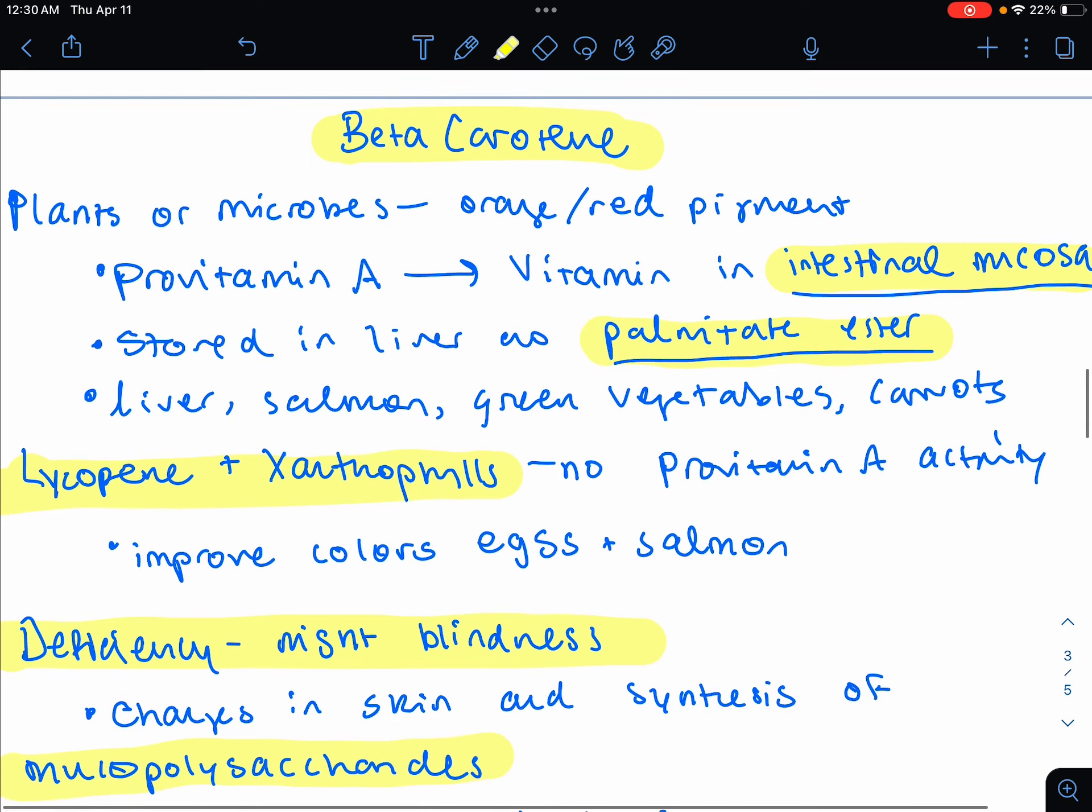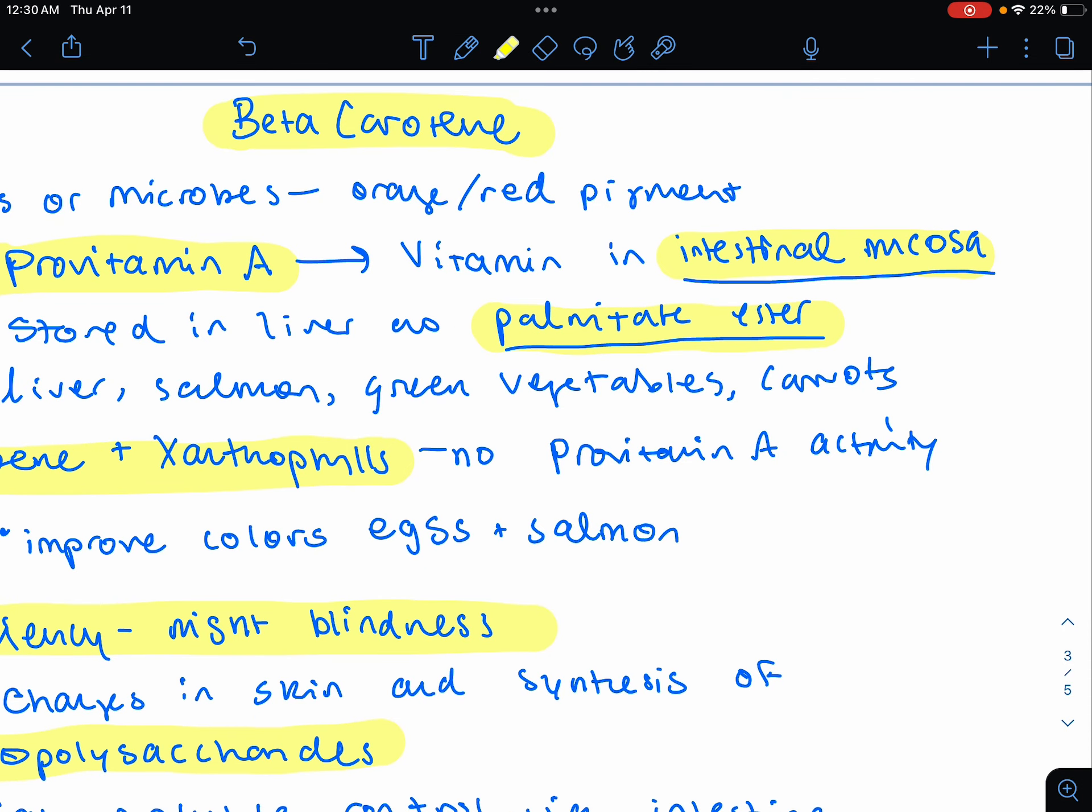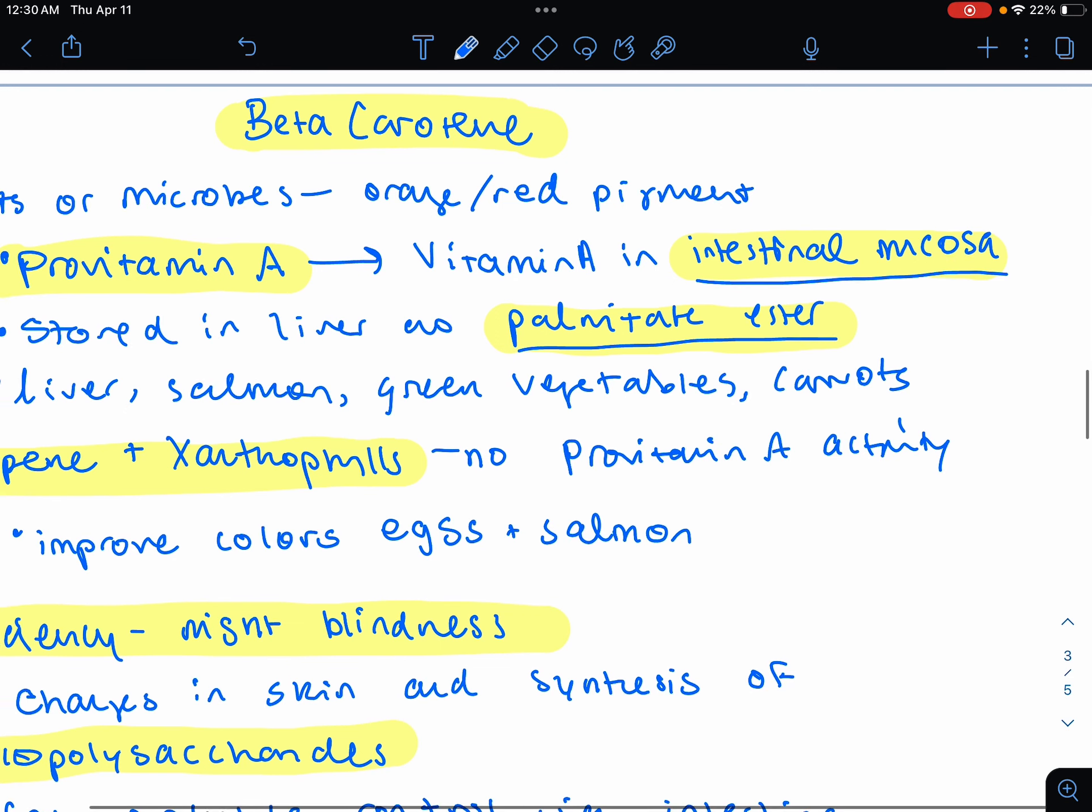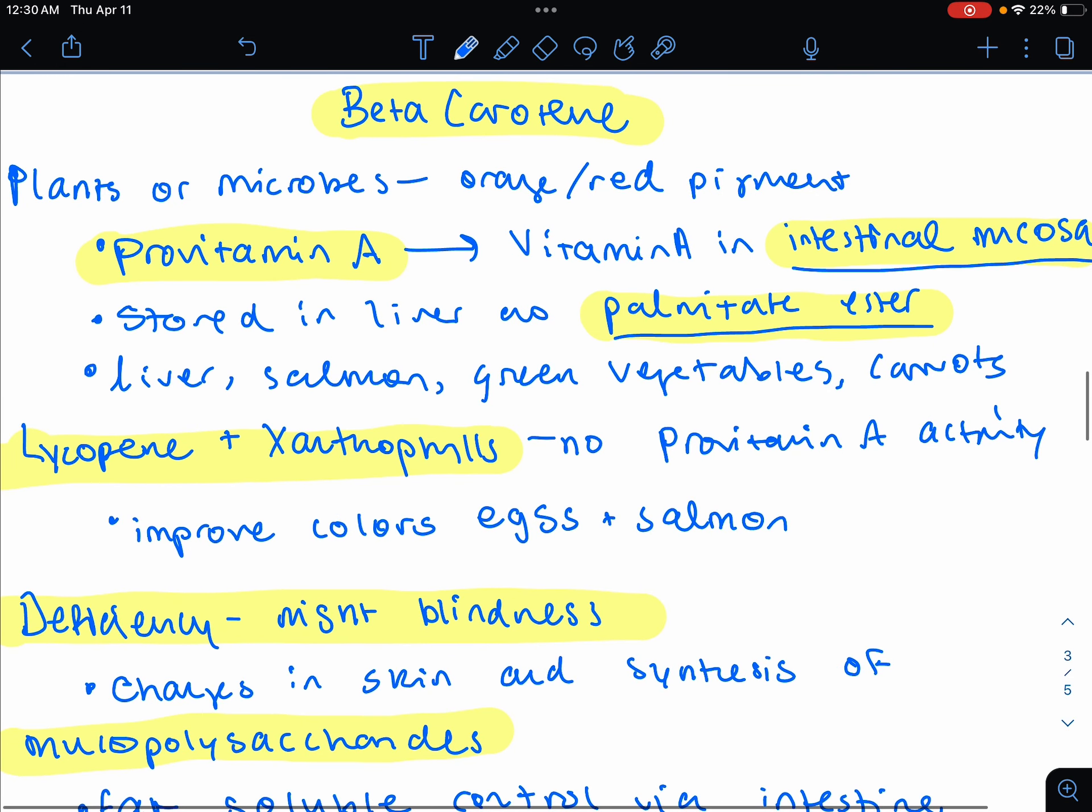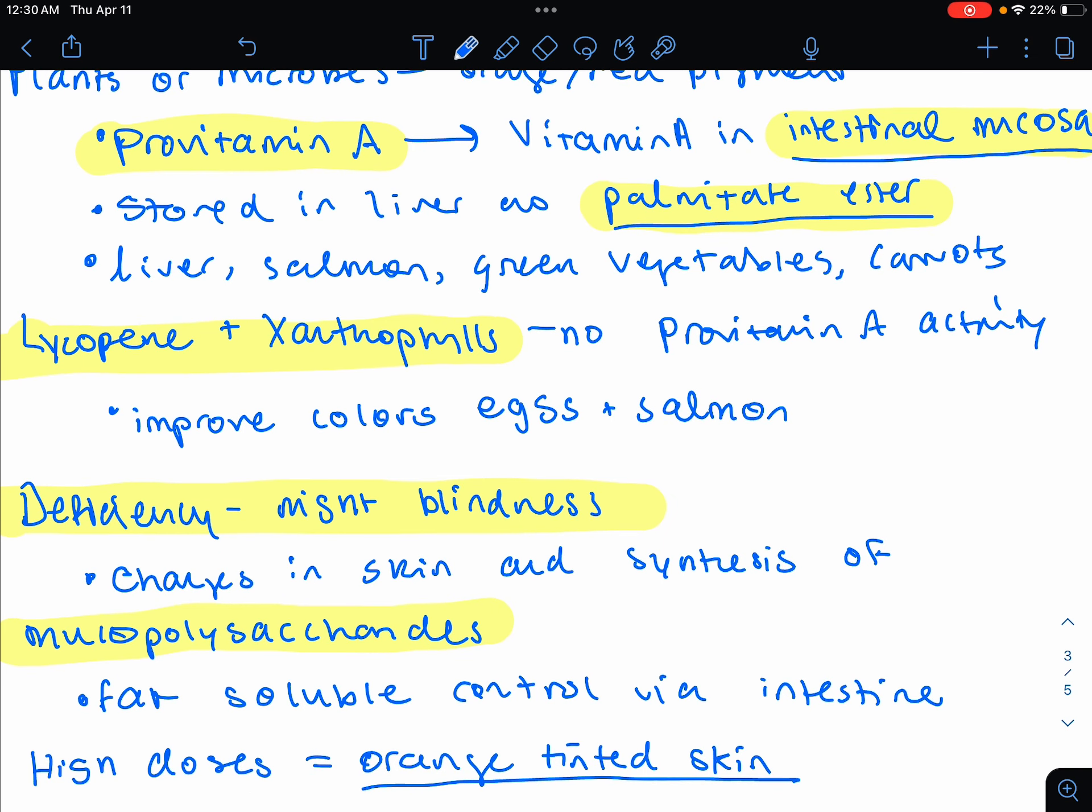Let's talk about beta-carotene now. This is going to come from plants or microbes. This is that orange-red pigment. It's also known as provitamin A. And this is because it could get converted into vitamin A, actual vitamin A, in the intestinal mucosa. And then you're going to store this vitamin A in the liver as palmitate ester. Sources could be eating liver, salmon, green leafy vegetables, carrots, and cantaloupe.